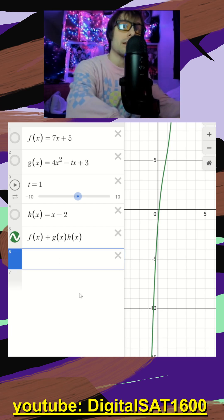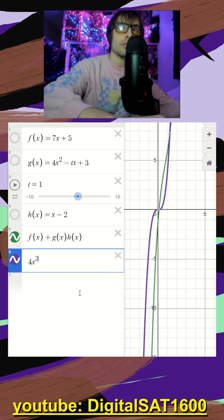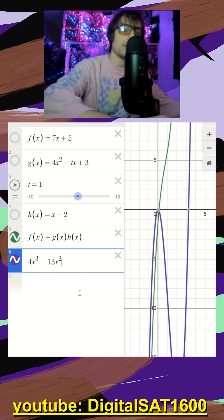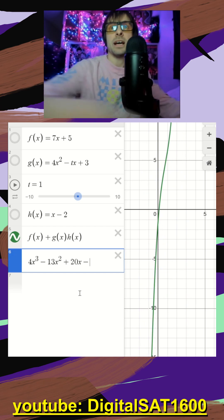Now they tell us that this should be equal to 4x to the third, minus 13x to the second, plus 20x minus one.